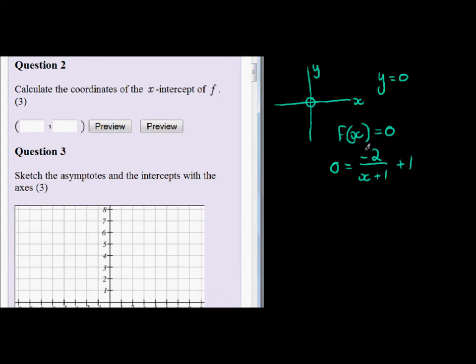Now if we solve it, we can get x on its own by subtracting 1 on both sides. So we get -1 equals -2 over (x+1). Now to get x on its own,